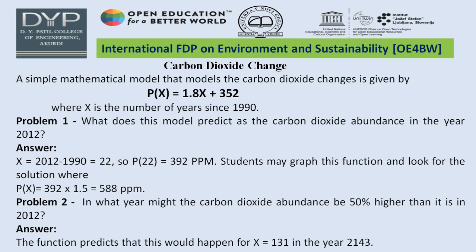A simple mathematical model for carbon dioxide change is given by P(X) = 1.8X + 352, where X is the number of years since 1990. The model predicts carbon dioxide in 2012: X = 2012 - 1990 = 22, so P(22) = 392 ppm. For 50% higher than 2012: 392 times 1.5 = 588 ppm. The function predicts X = 131, meaning the year 2143.